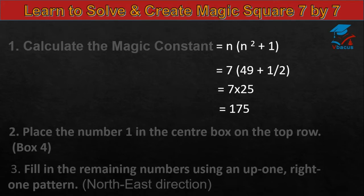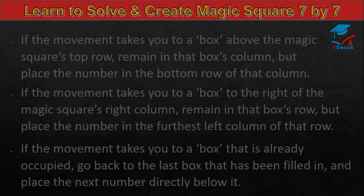Here the sum of vertically, diagonally and horizontally, the sum will be 175. Place the number 1 in the center box on the top row, box 4. Filling the remaining numbers using an up 1 right 1 pattern, north-east direction. If the movement takes you to a box above the magic square's top row, remain in that box's column, but place the number in the bottom row of that column.